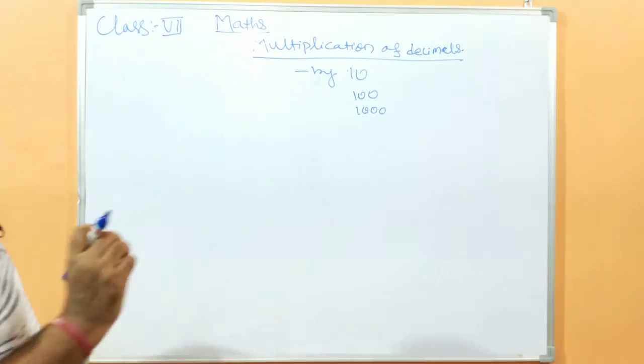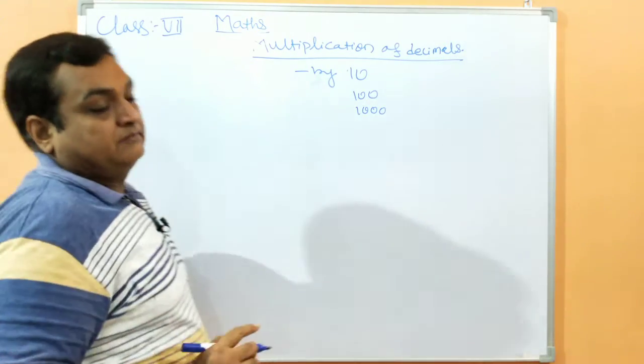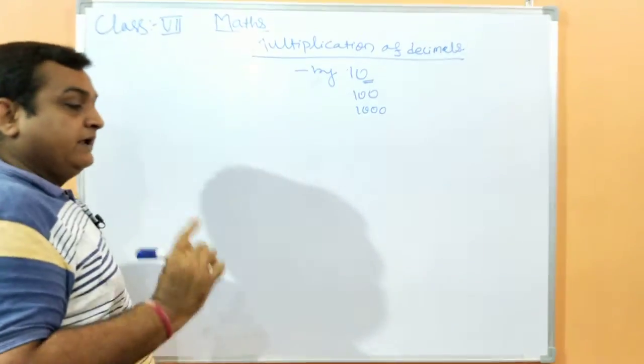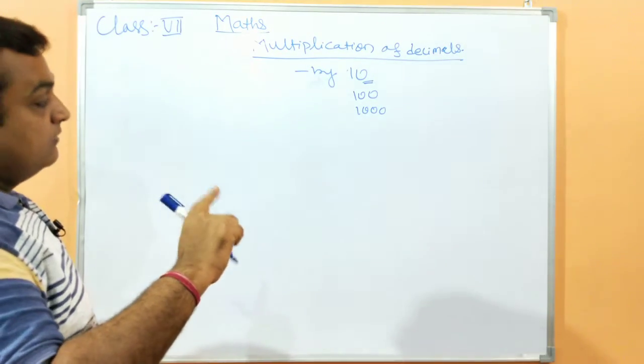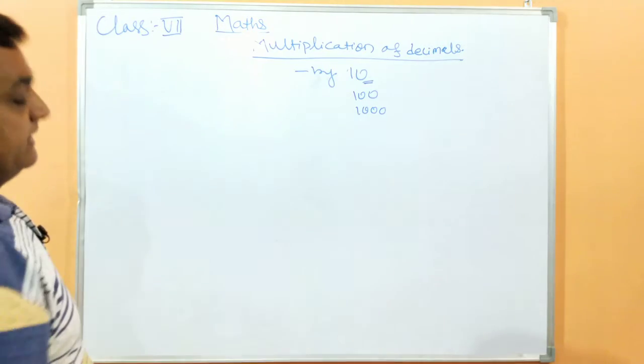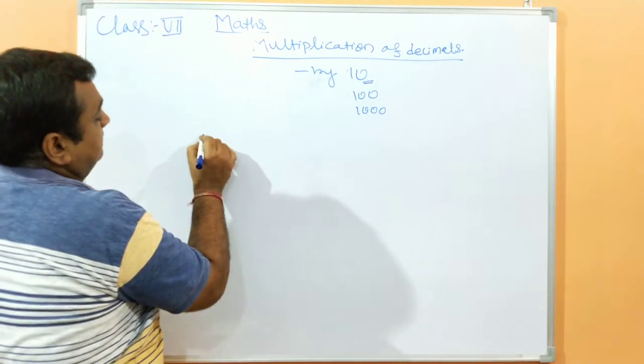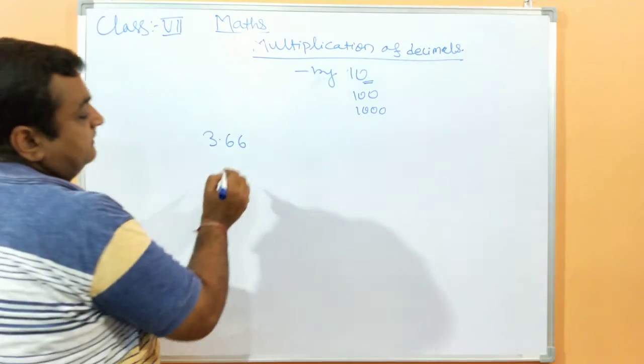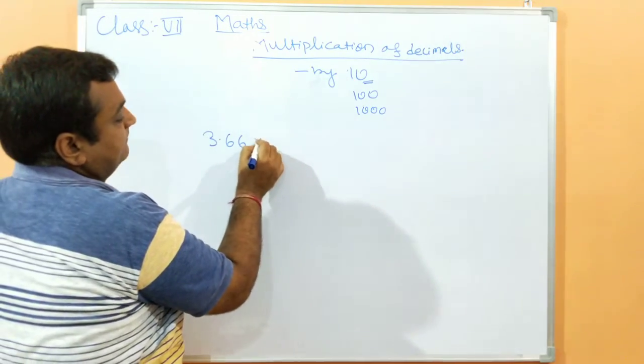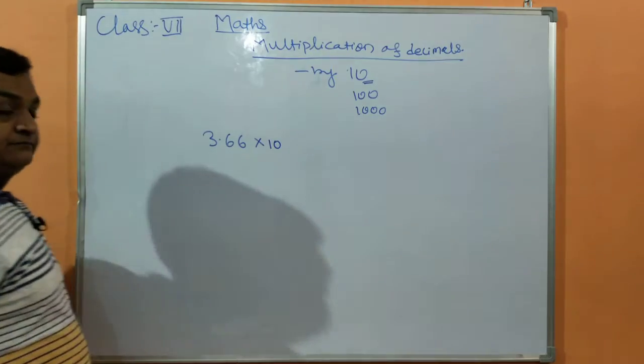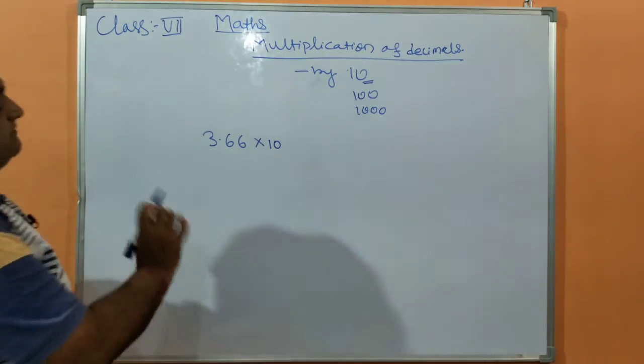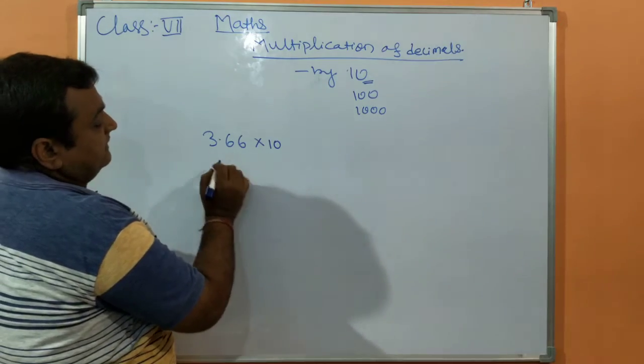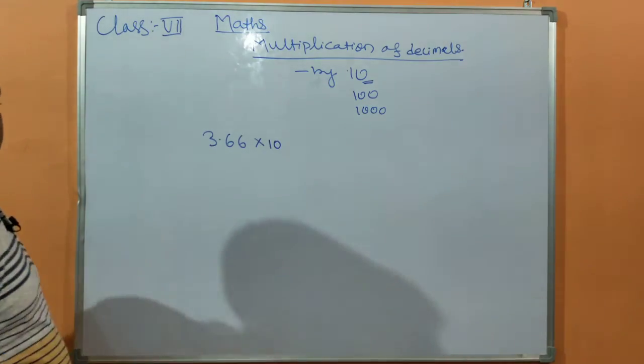If a decimal number is multiplied by 10, then the decimal shifts one digit to the right. For example, 3.66 is the number multiplied by 10. We will multiply by 10 irrespective of the decimal point.